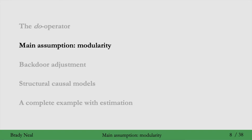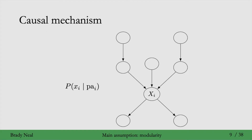But before we get to the backdoor adjustment, we must cover the modularity assumption, which is a very important assumption in the kinds of causal models that we'll be looking at. First, we must define what we mean by a causal mechanism. The causal mechanism for x sub i we'll denote as p of x_i given parents of x_i. This conditional distribution is sometimes what people mean when they say causal mechanism. We'll see this more specifically later on in this lecture.